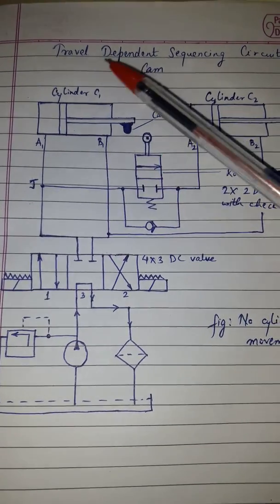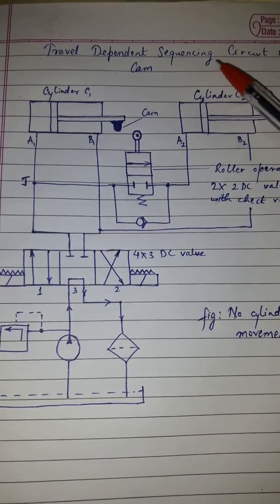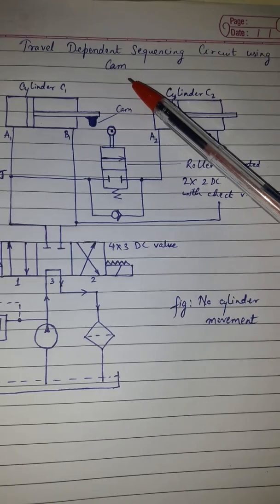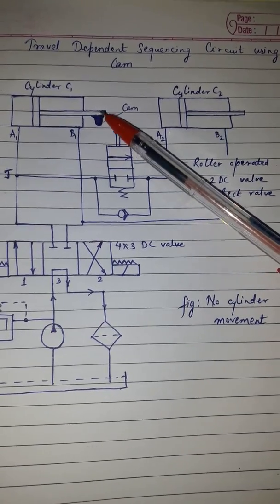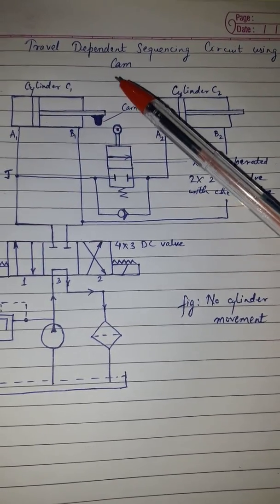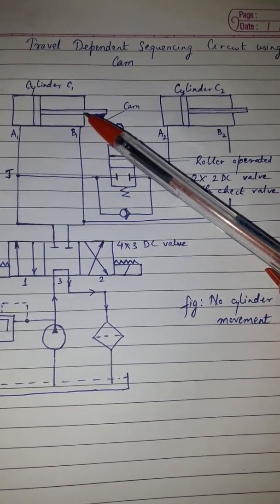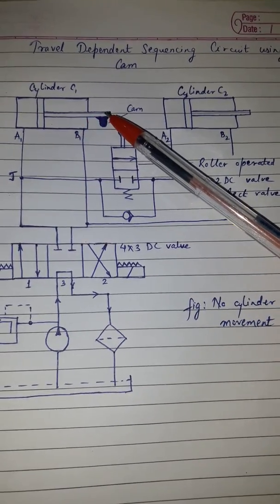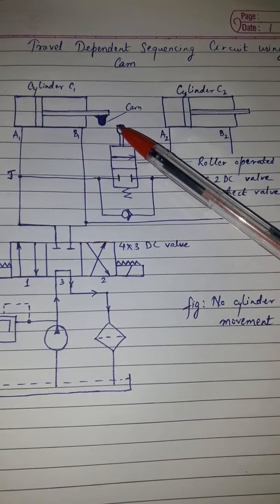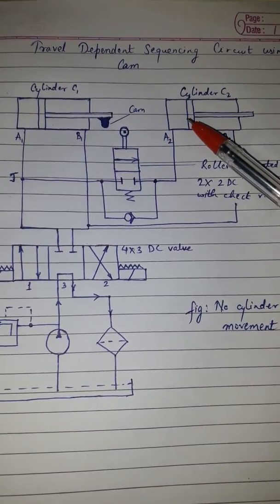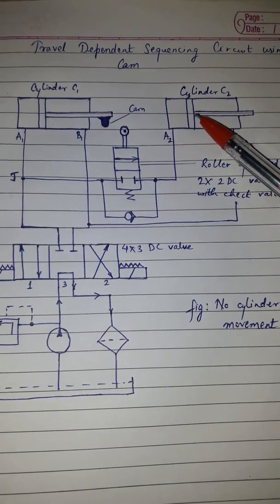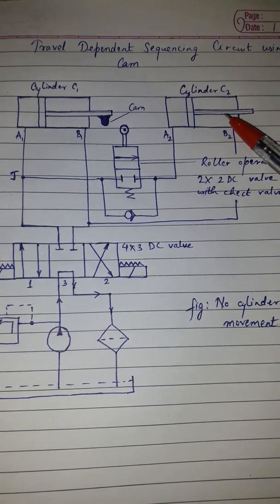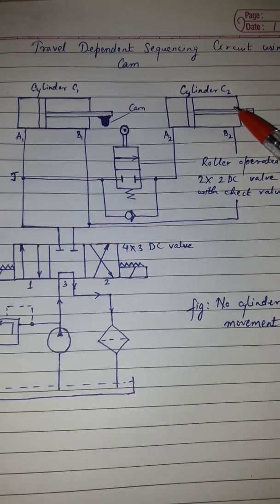This was the travel dependent sequencing circuit using CAM. It is called travel dependent because the travel of the piston in C1 gives rise to the movement of the piston in cylinder C2.